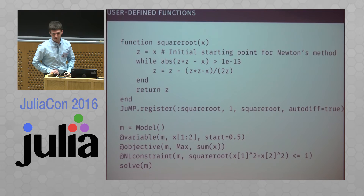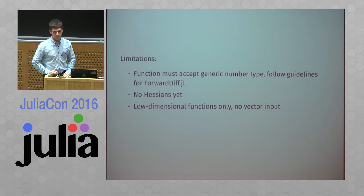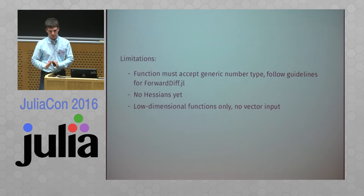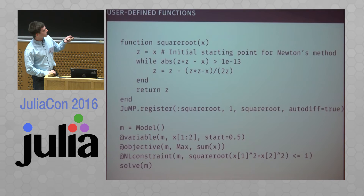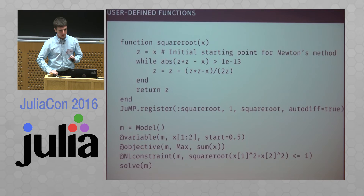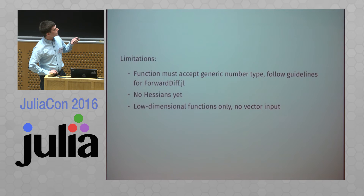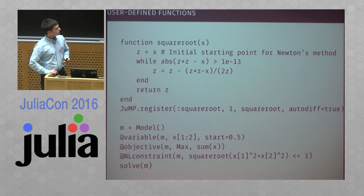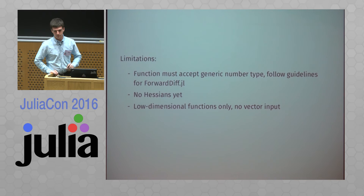You can now have a JuMP model that adds a constraint like: the square root of x1² plus x2² is less than 1. When you say solve, JuMP will know how to compute the derivative of this expression — all using ForwardDiff. The limitations: your Julia code must accept a generic number type so ForwardDiff can differentiate it. We don't support Hessians yet, so only first-order derivatives are provided to solvers. Also, input to user-defined functions must be a list of scalars and can't be arbitrarily large — we're just trying things out and may extend this later.